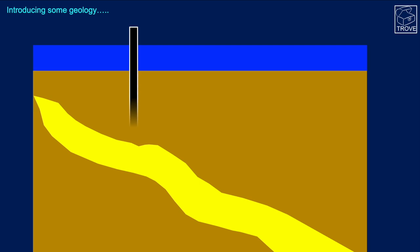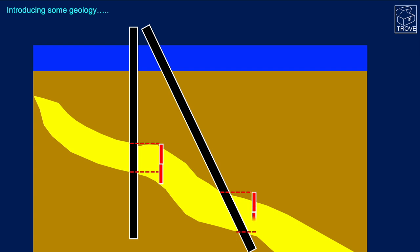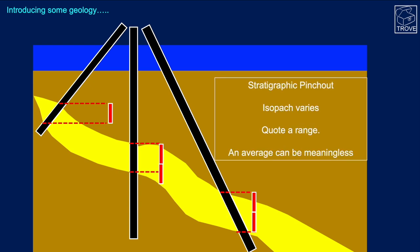Let's introduce some geology. We're going to drill the same three wells and come up with the same three numbers, but what's different is the very variable thicknesses of the rock. This image represents a stratigraphic pinch out, where the thickness of the sandstone unit is actually changing. The range can go from zero to more than two units, which can be a little meaningless — and quoting an average can be equally dangerous and meaningless.